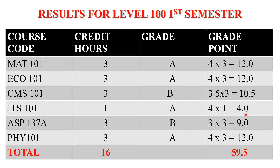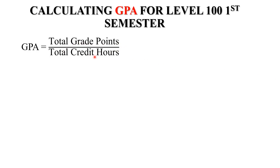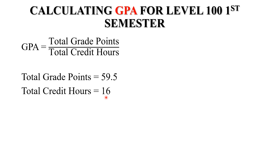We find the summation of all grade points: 12 + 12 + 10.5 + 4 + 9 + 12 = 59.5. Then the total credit hours: 3 + 3 + 3 + 1 + 3 + 3 = 16. To calculate the GPA for this student in Level 100 first semester, we apply the formula: total grade point divided by total credit hours, which is 59.5 ÷ 16.